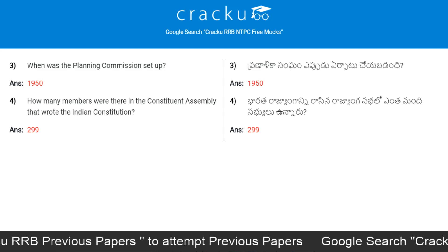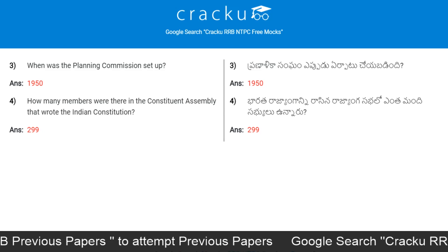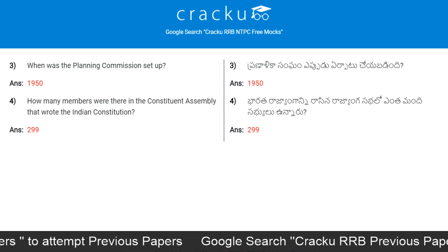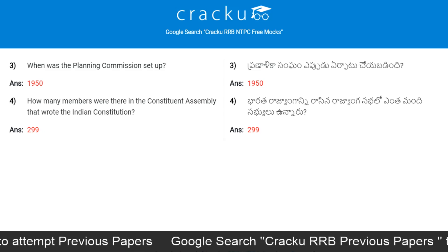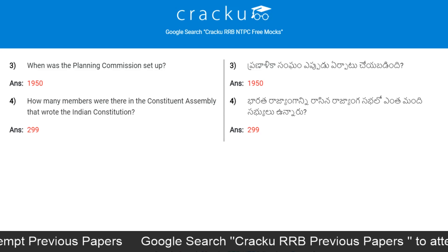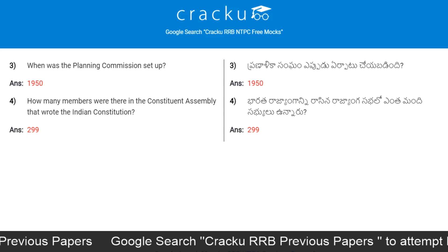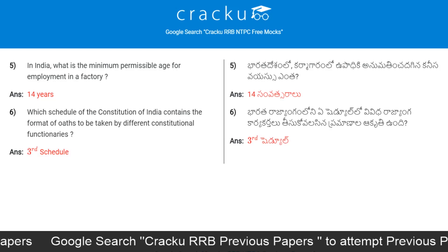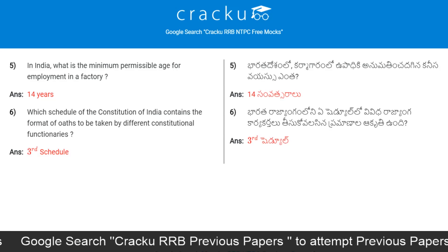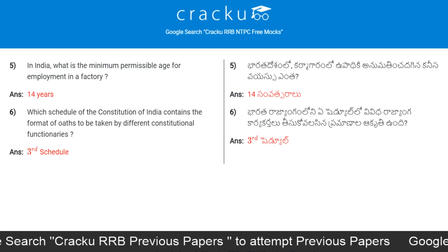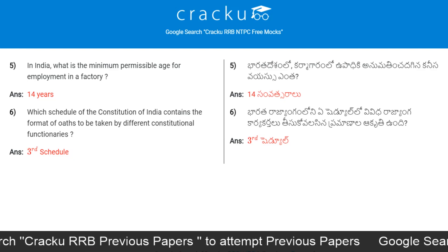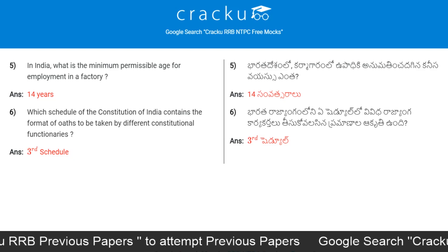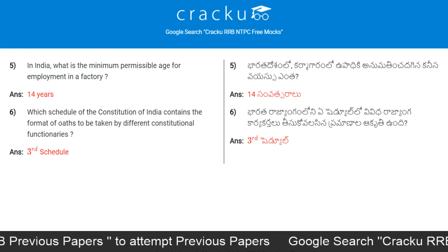How many members were there in the Constituent Assembly that wrote the Indian constitution? 299. In India, what is the minimum permissible age for employment in a factory? 14 years.